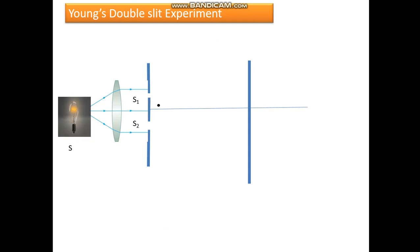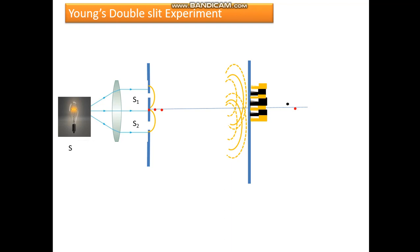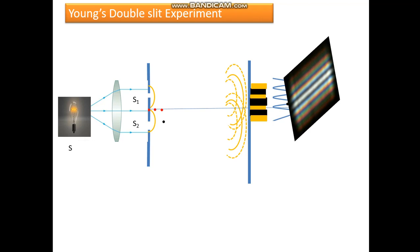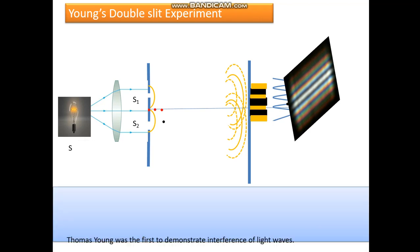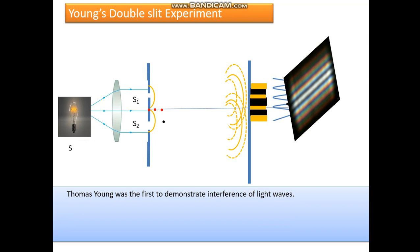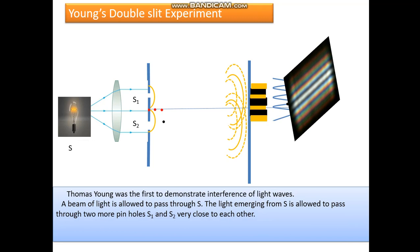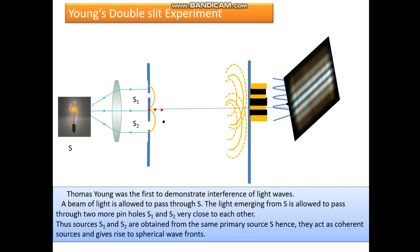Young's double slit experiment consists of a source S which gives rise to S1 and S2 on a cardboard with two holes, giving out spherical wavefronts which reach the screen and produce an interference pattern. Thomas Young was the first to demonstrate interference of light waves. A beam of light passes through S, then through two pinholes S1 and S2 very close to each other. Since S1 and S2 are derived from the primary source S, they act as coherent sources and give rise to spherical wavefronts.